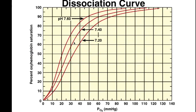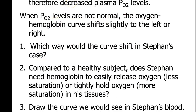Let's think about a case study. Stephen has chronic bronchitis, and this condition has always increased the resistance to his airways and therefore decreased plasma oxygen levels. When the partial pressure of oxygen levels are not normal, the oxygen-hemoglobin curve shifts slightly to the left or to the right. I want you to think about which way his curve would shift. Compared to a healthy subject, does Stephen need hemoglobin to easily release oxygen — less saturation — or tightly hold oxygen — more saturation — in his tissues? Draw the curve we would see in Stephen's blood.